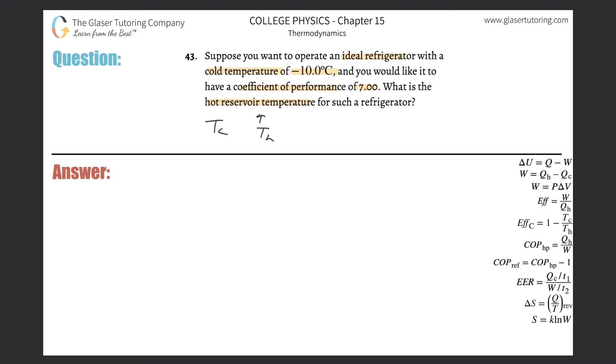So basically they gave us the cold temp T sub C, they're asking us for the hot temp T sub H, and they told us the coefficient of performance COP. So if you take a look at number 37, I derived this particular formula: coefficient of performance is one divided by the efficiency.